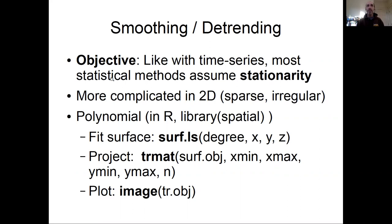Most spatial statistical methods assume stationarity. They assume that larger trends in the data have been removed, and we're looking at the autocorrelation in the residuals from that.